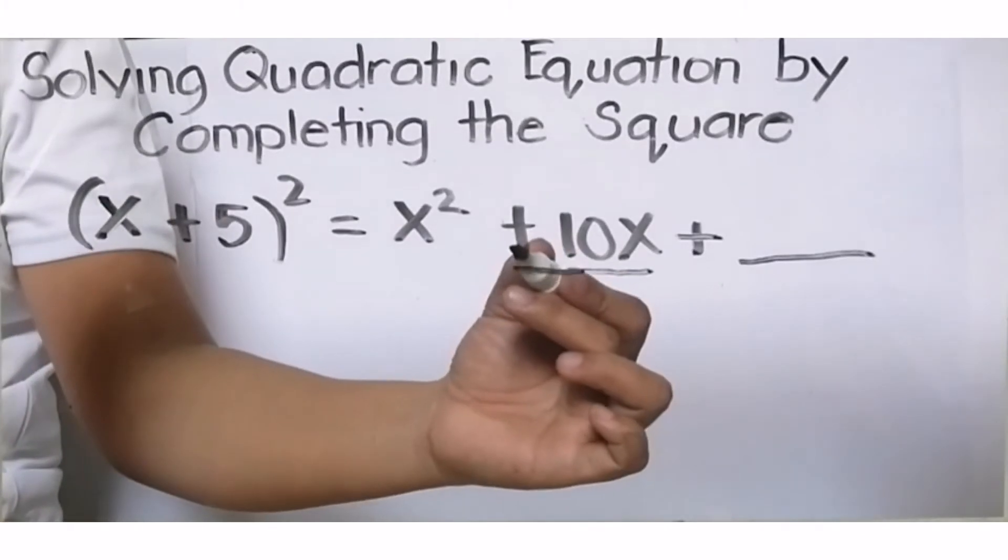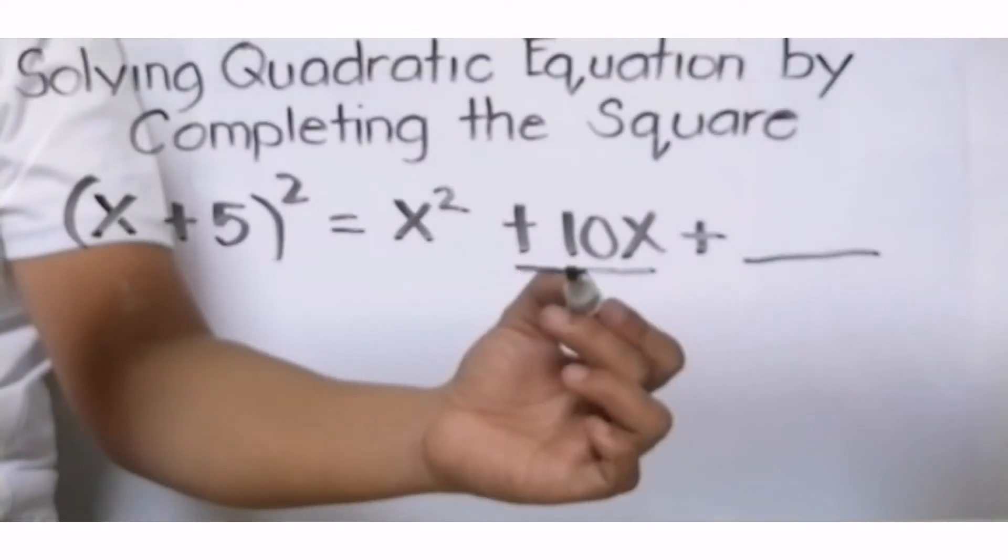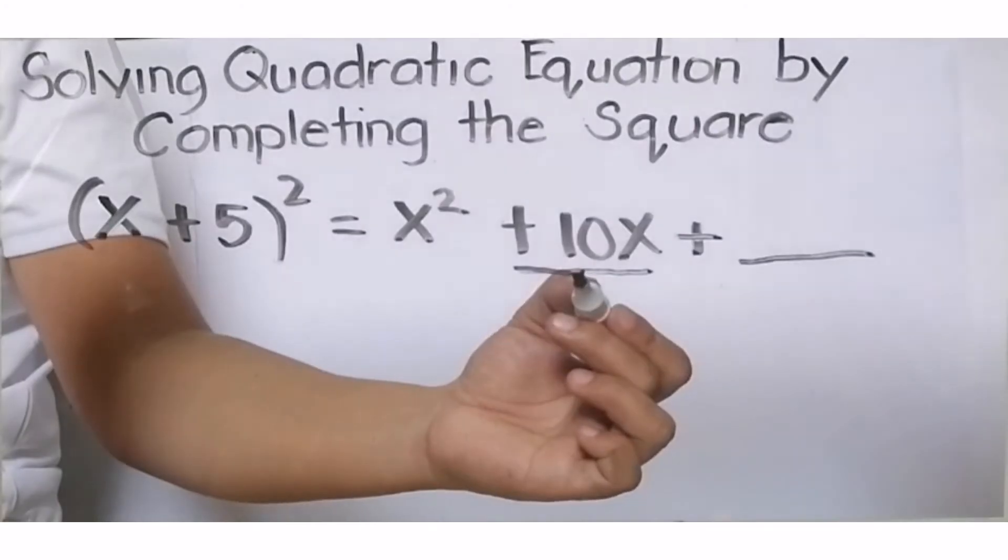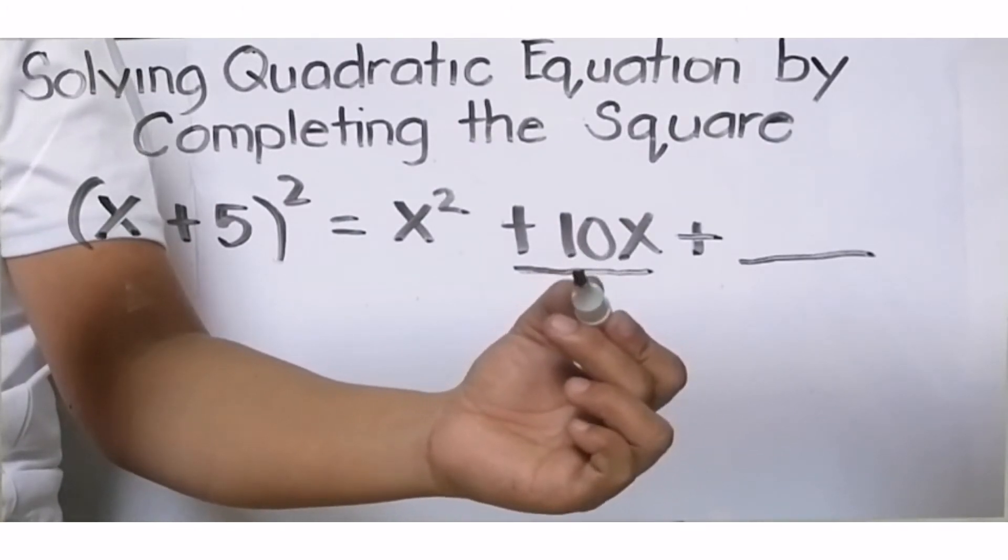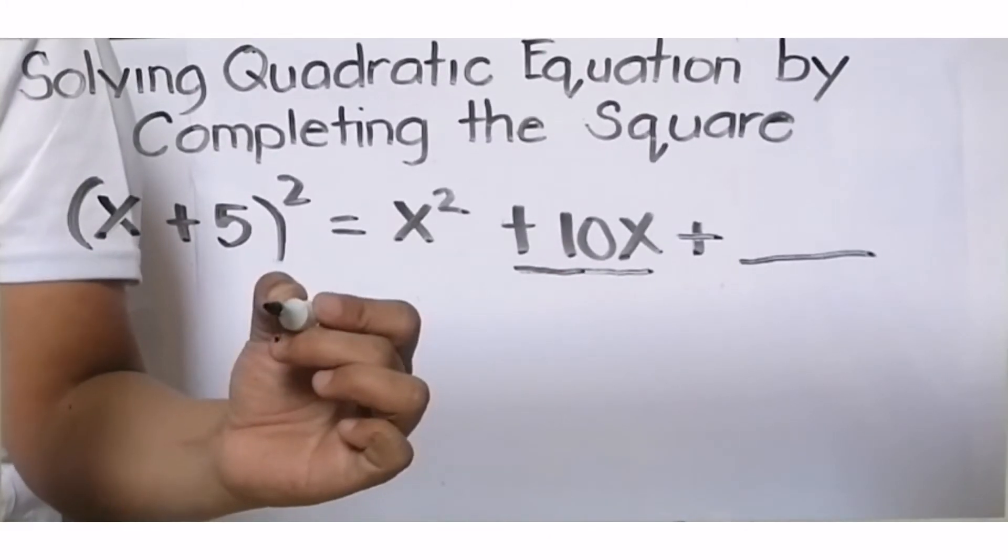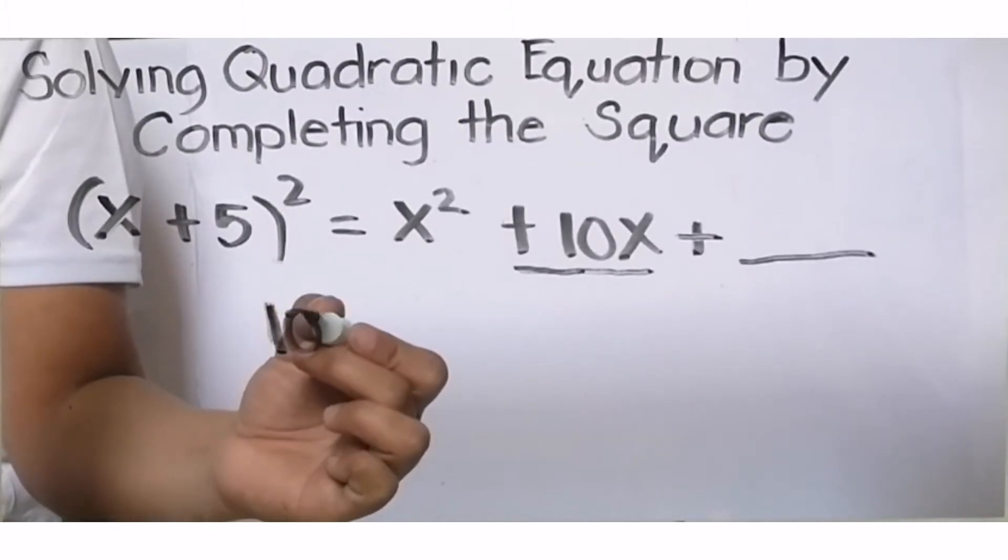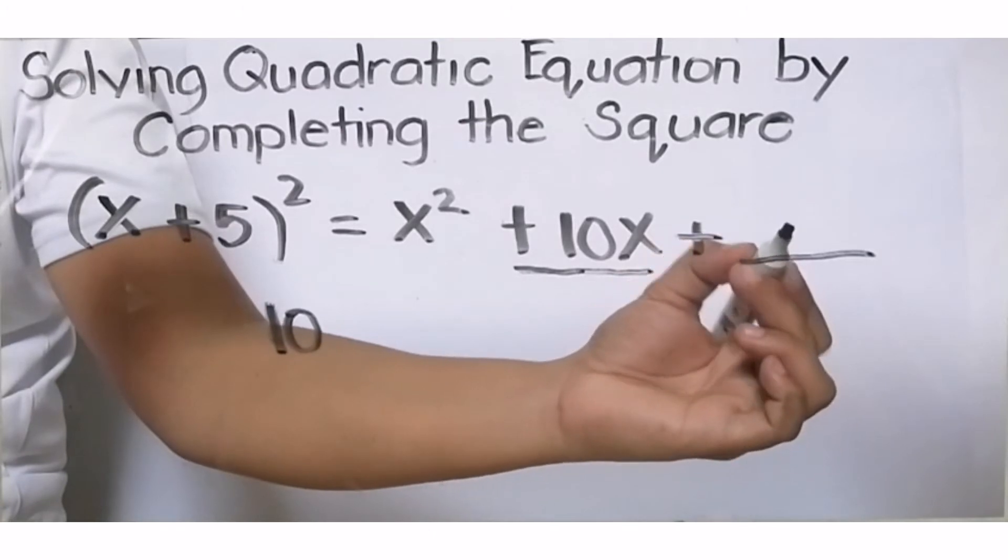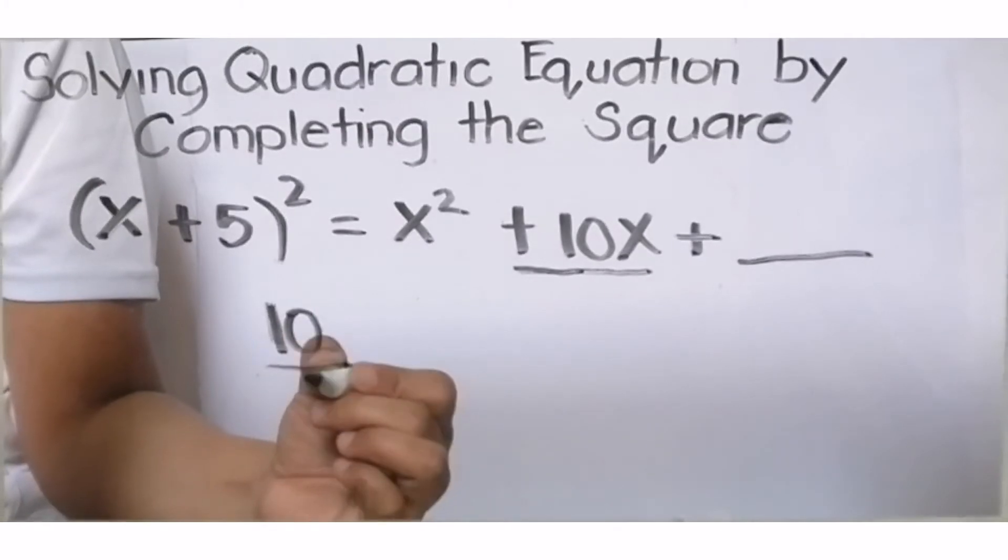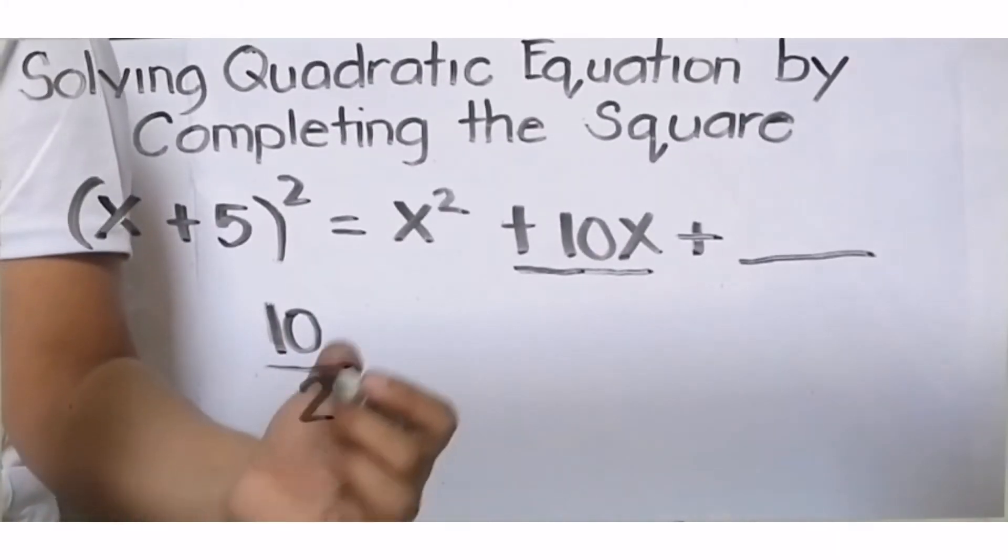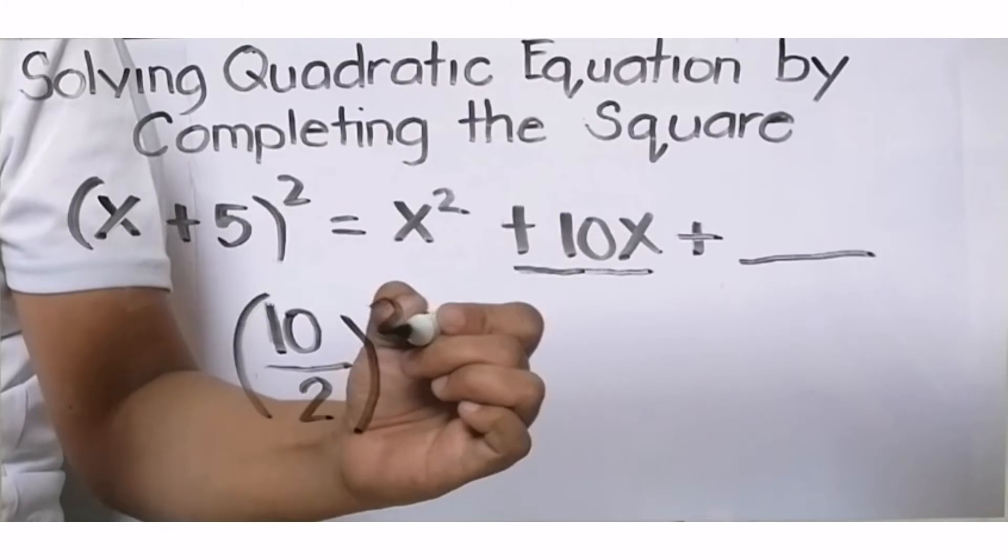Check the middle term with its preceding sign. Include its sign, because it could be plus or minus depending on the given binomial. For this case, it's positive. Consider the numerical coefficient of our middle term, or what we call the linear term. What is the numerical coefficient including its sign? We have positive 10. To get this last term, we need to divide by 2, then square the answer.